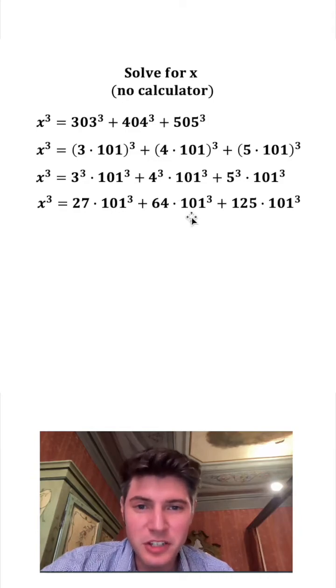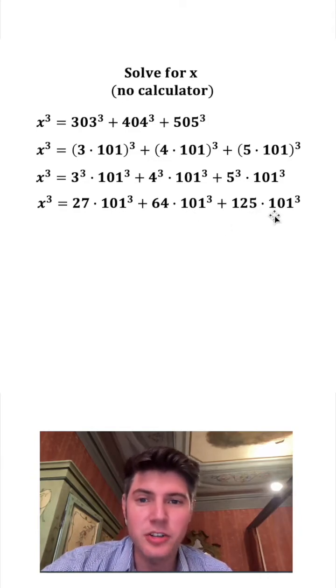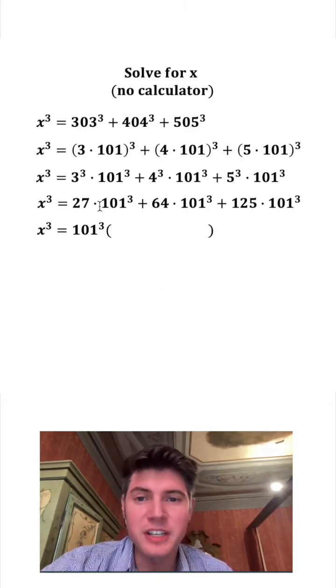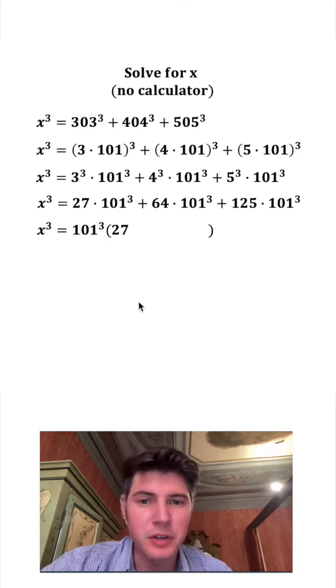On the left hand side all three of these terms have 101 cubed in it, so I'm going to factor that out. This is going to look like this. So then I have to ask myself, 101 cubed times what gives me 27 101 cubes? That'd be 27.